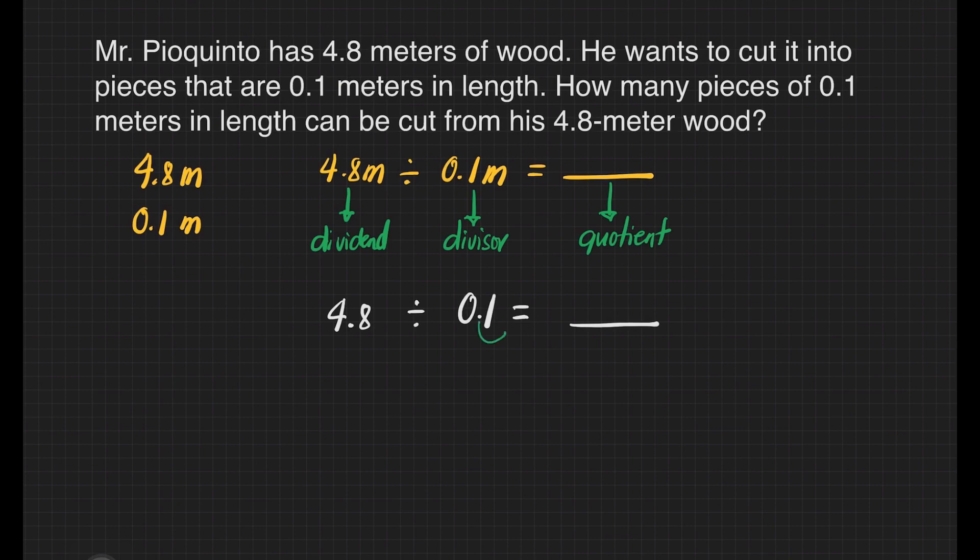Whatever we did in our divisor, we have to do that also in our dividend, and that's one. Our division sentence now is 48 divided by one, and that gives us 48.